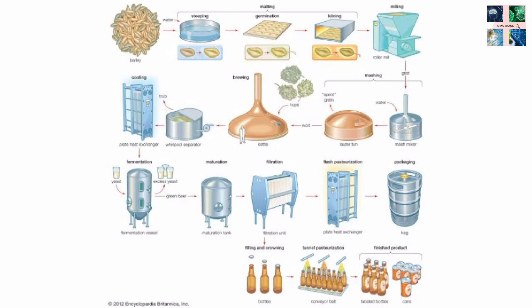Beer is more than just water, hops, malt, and yeast. In the beer-making process, various ingredients are mixed, processed, and sometimes the structure of the raw material is altered. The brewing process is made up of 10 production steps from the fresh barley to the finished beer, which we will present in detail one by one.